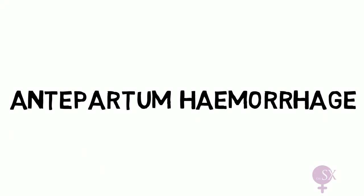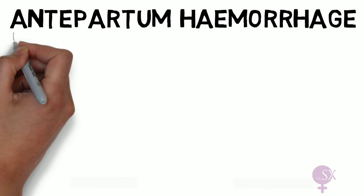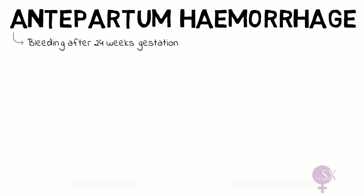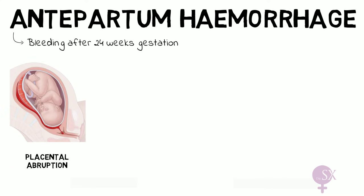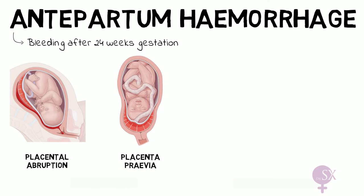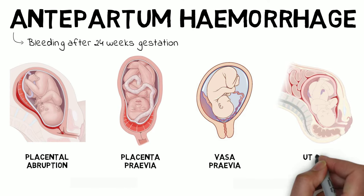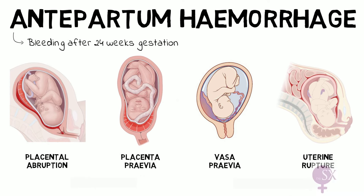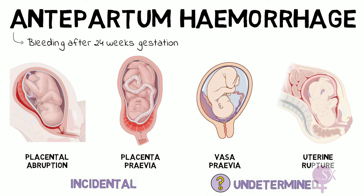Antepartum hemorrhage refers to bleeding occurring after 24 weeks of pregnancy. There are a number of causes to consider: placental abruption, placenta previa, vasa previa, and uterine rupture. Other causes include incidental findings such as cervical lesions or polyps, infection, or trauma. In some cases the cause is not determined, and this falls under the category of undetermined origin.